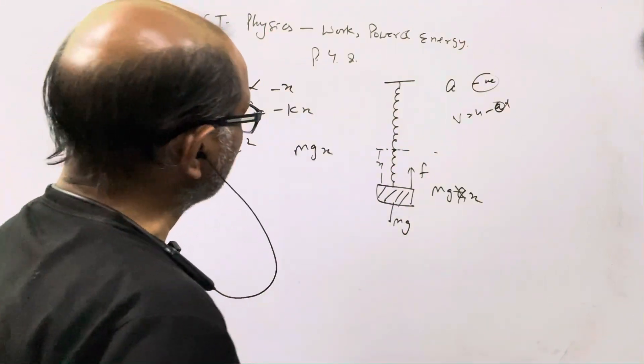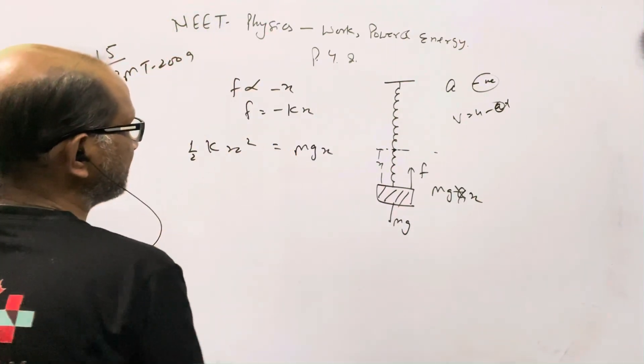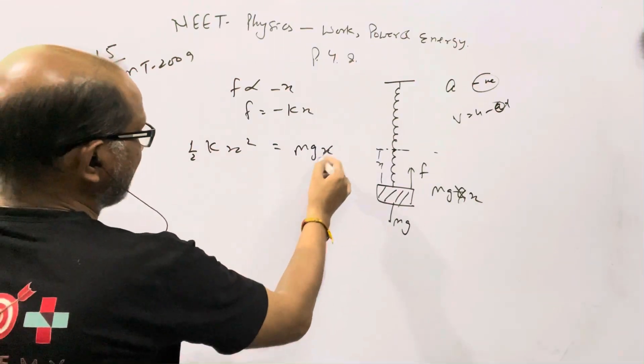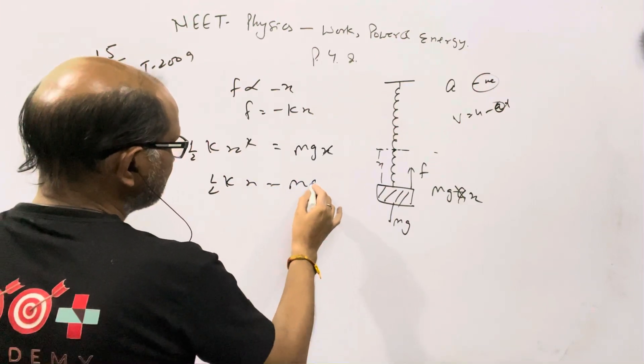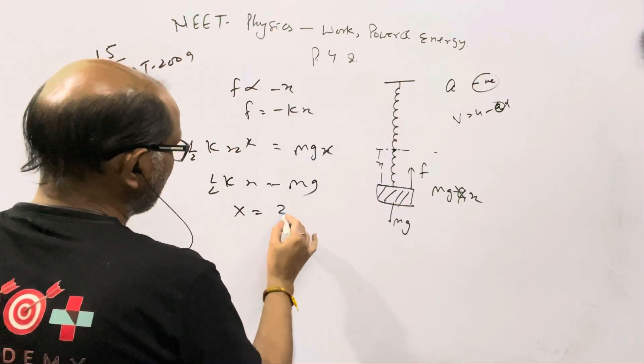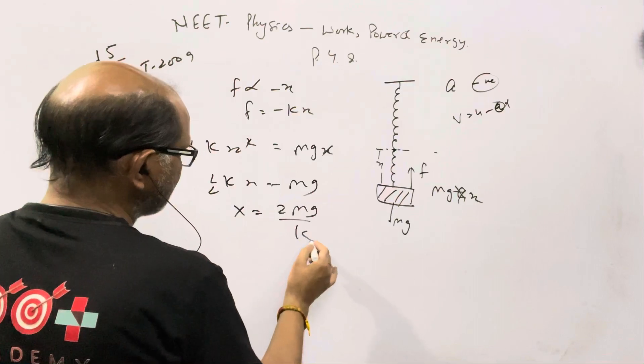These will equal each other. So x cancels from x, giving half kx equals mg. So the value of x comes out to be 2mg by k, that's 2mg/k.